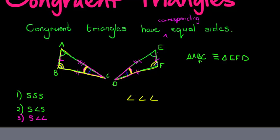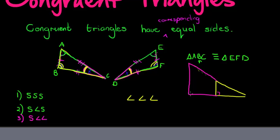It is not true that if I have angle-angle-angle, the two triangles are congruent. For example, here's a triangle and here's a bigger triangle. This angle is 90, this is 90 — they share that angle, and the third angle must also be equal because the inside angles must sum to 180. So if two angles are the same, the third is automatically equal. Three angles do not give me extra information — I still need one side.